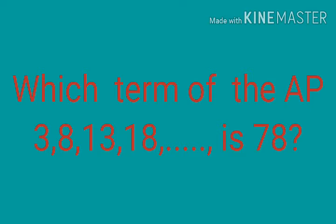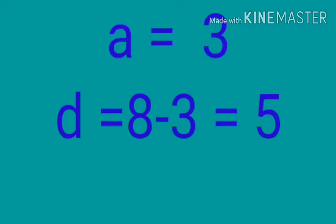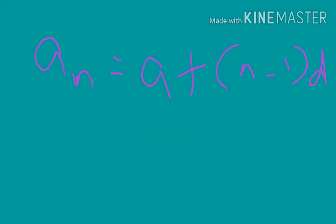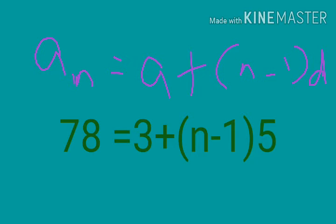Which term of the AP 3, 8, 13, 18, etc. is 78? We need to find the value of N. AN is given as 78. A is the first term, that is equal to 3. D we need to find by subtracting the second term minus first term, so that is 8 minus 3 equal 5. So we can write the equation: AN equal A plus N minus 1 into D. Substituting the values of A, D and AN, we get 78 equal 3 plus N minus 1 into 5.